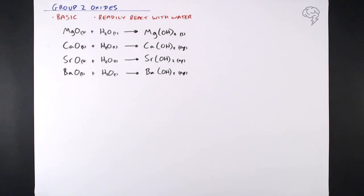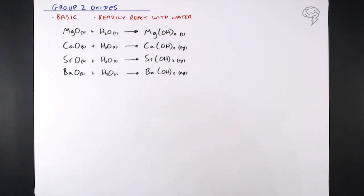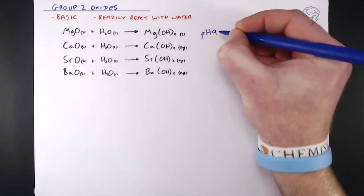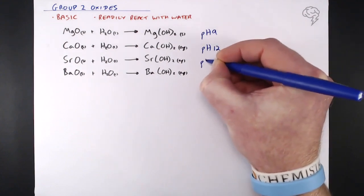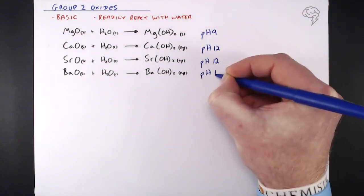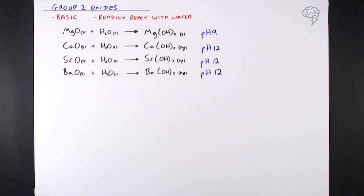The group 2 hydroxides get more soluble as you go down the group, which is why magnesium hydroxide is a solid — it's not very soluble. There's a consequence of that when we look at the pHs of the solutions formed. If you put magnesium oxide in water it reacts and you end up with a solution at about pH 9, so it is alkaline, but all the others are much more alkaline, giving pH 12.